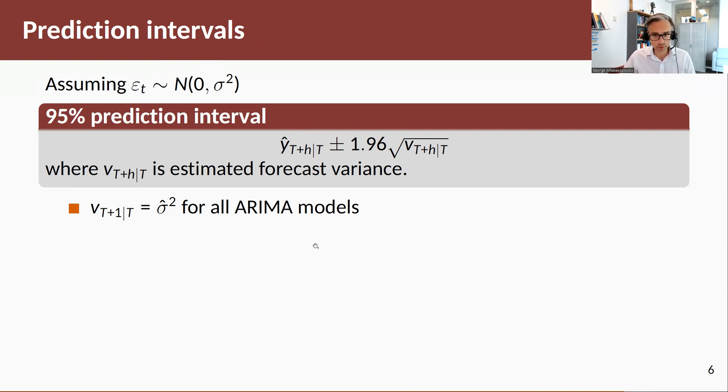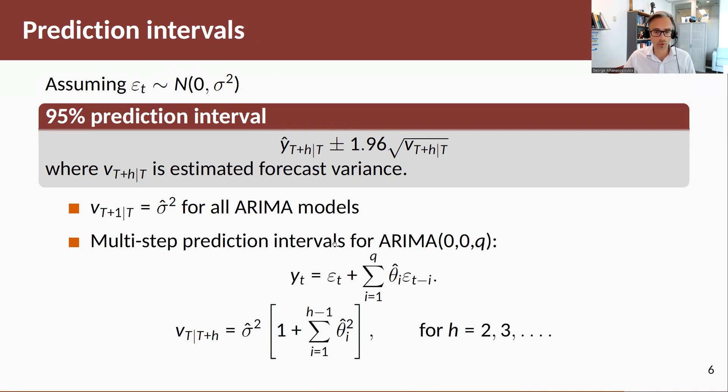Now for multiple step ahead forecast, this becomes tricky for some models. For the models that it doesn't become tricky and it's pretty straightforward is for all the MA models. For MA models, this is an estimated MAq. From this we can easily calculate the variance because all my right-hand side are IID errors and I can take the expectations of these fairly easily.